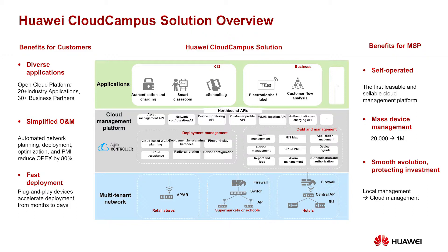The third layer is the value-added service layer. On a cloud-managed network, through abundant open APIs, Huawei partners can develop rich value-added apps for customers such as customer flow analytics, eSchool management, health management, and more. For fast deployment, the time to deploy a network decreases from several months to half a day. The integrated cloud management platform enables automatic planning, deployment, and optimization, decreasing enterprise OPEX by 83%. Partners can also deliver location analytics apps for retail stores, schools, and hospitals, and enable customers to connect to Wi-Fi using social media accounts such as WeChat and Facebook.